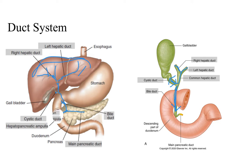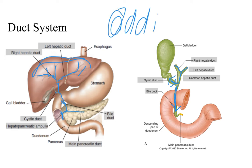At the hepatopancreatic ampulla opening — the major duodenal papilla — we don't want juices, bile, and pancreatic secretions constantly flowing into the duodenum. So there is a muscular sphincter there called the sphincter of Oddi, which regulates when juices flow from the hepatopancreatic ampulla into the duodenum.